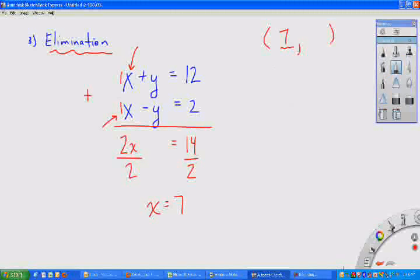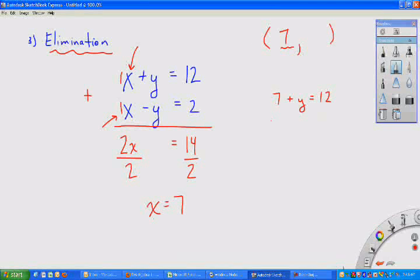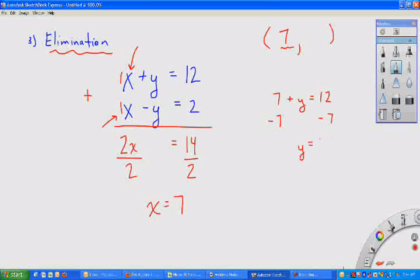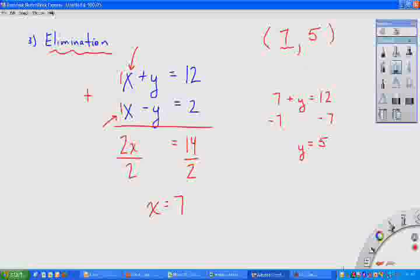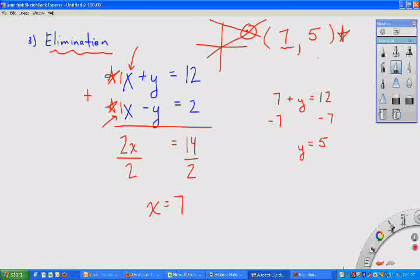Now in order to go back and find y, all we've got to do is take this 7 and plug it into either this x or this x. It doesn't matter. I'm going to take the top one. I've got 7 plus y equals 12. From here, I just do a simple minus 7 to both sides, and I have y equals 12 minus 7 is 5. So my solution is 7 comma 5. And we've always got to remember what this solution means. It is the crossing point of this equation and this equation.